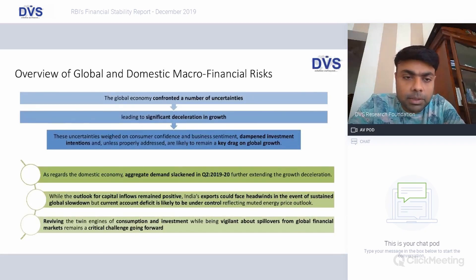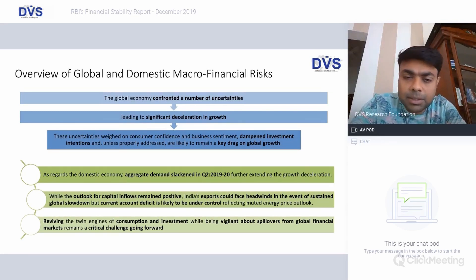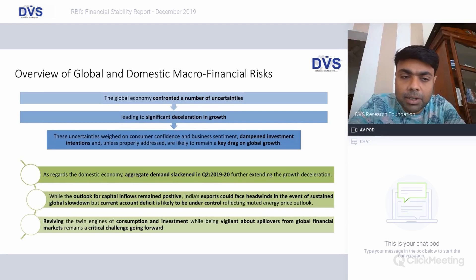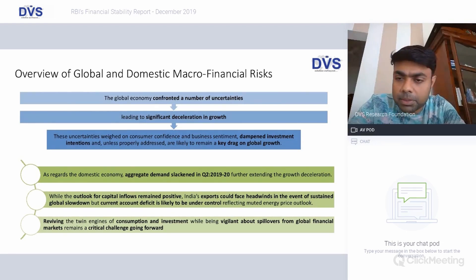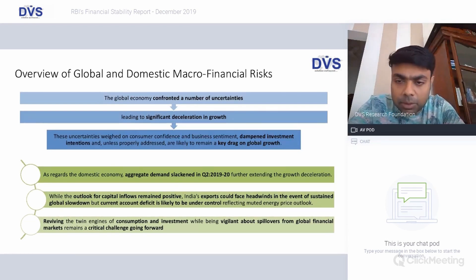When we look at macro financial risks, we talk about uncertainties which happen at the highest level. A number of uncertainties have led to a deceleration in growth. Global GDP growth is expected to be between 2 to 3 percent, which has significantly brought down expectations from both investment and growth perspectives. As far as the domestic economy is concerned, aggregate demand in Q2 saw a dip in growth rates.